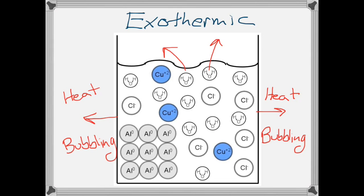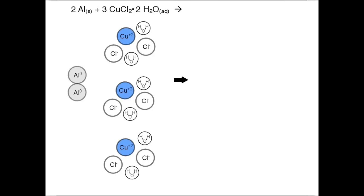That tells us what's going to happen at the macroscopic level. Now let's look at the microscopic level. The reactants can't react together in any old way. They have to follow particular ratios. So in this case, we see that it takes two atoms of aluminum to react with three units of copper chloride dihydrate.